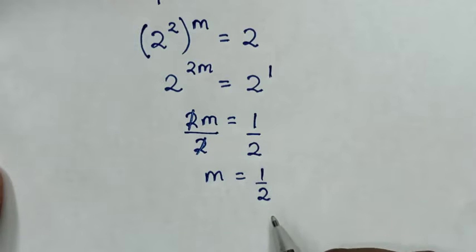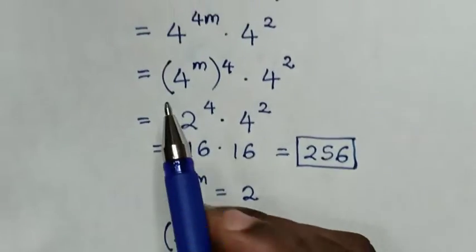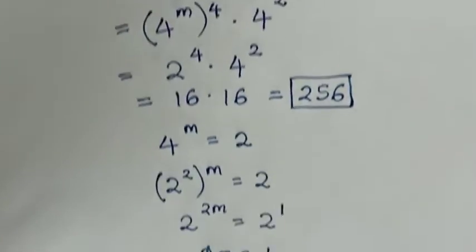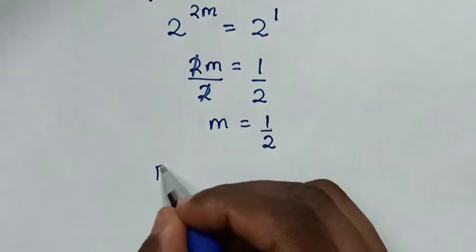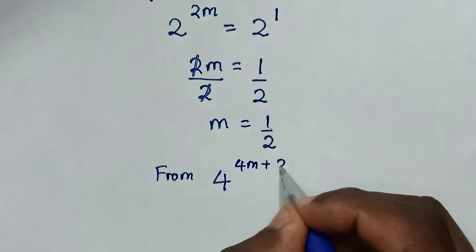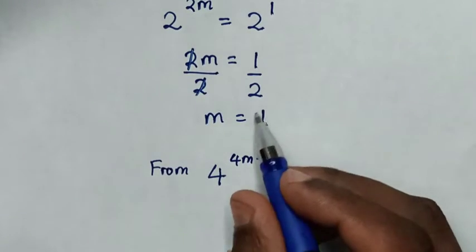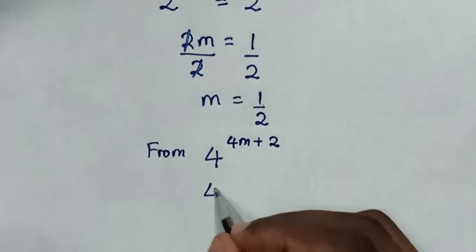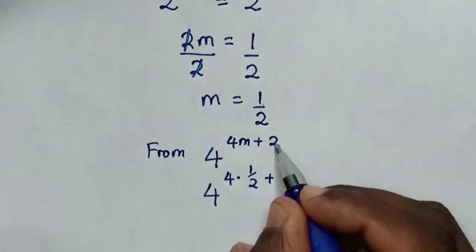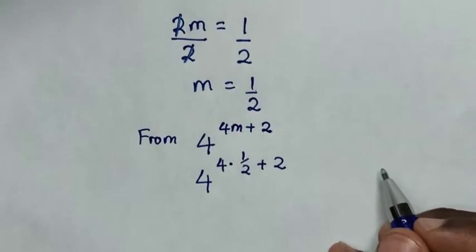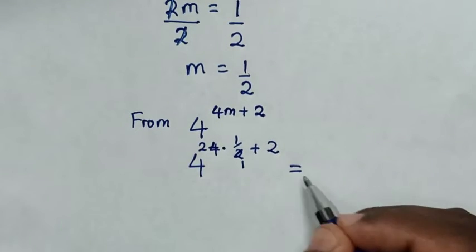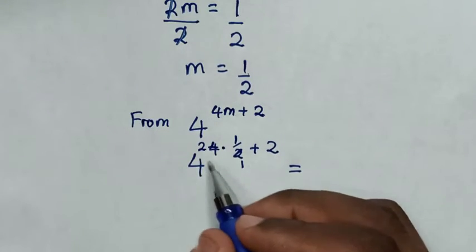Now m is equal to one half, but we are asked to find the value of 4 power of 4m plus 2. From 4 power of 4m plus 2, we'll substitute the value of m, which is a half. Then it will be 4 power of 4 times one half, then plus 2. To simplify, 2 will cancel with 4, leaving 2.